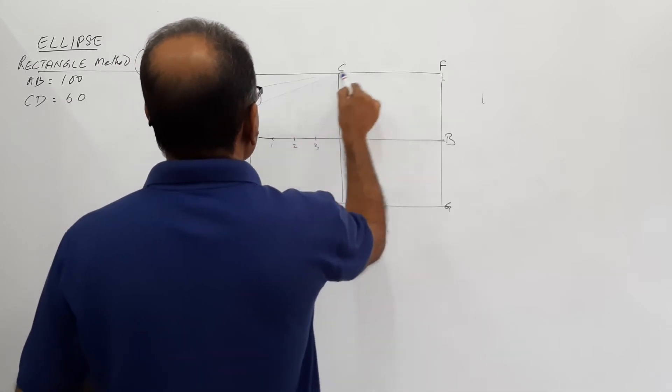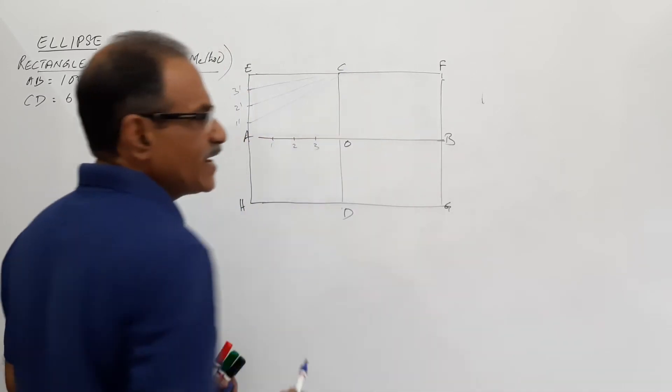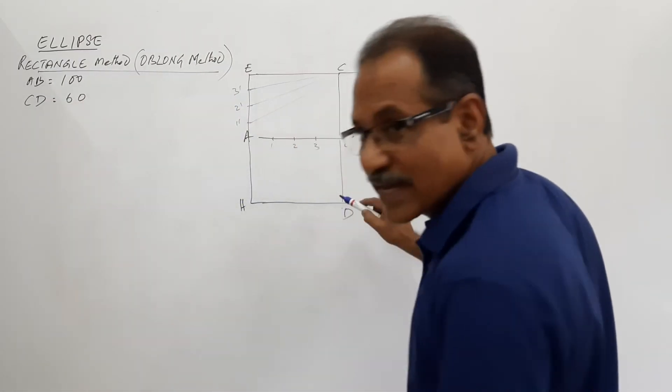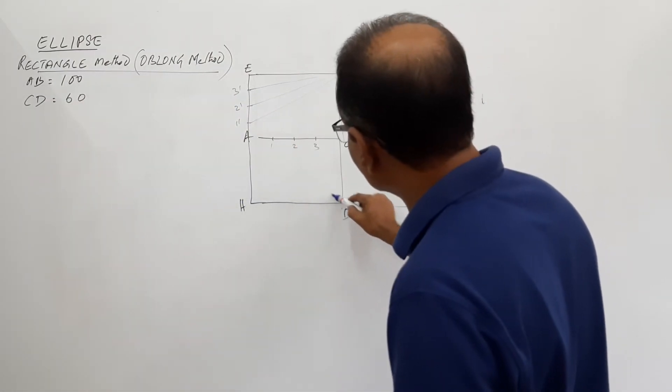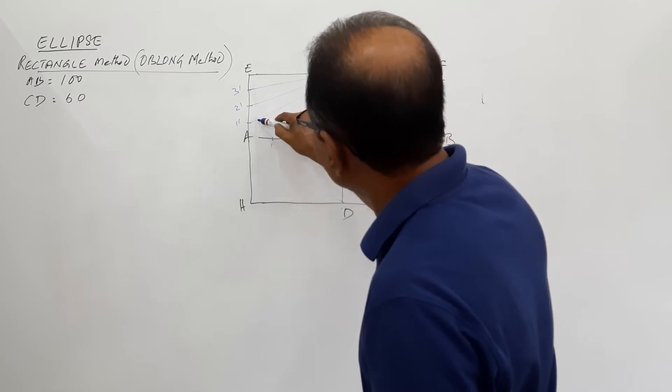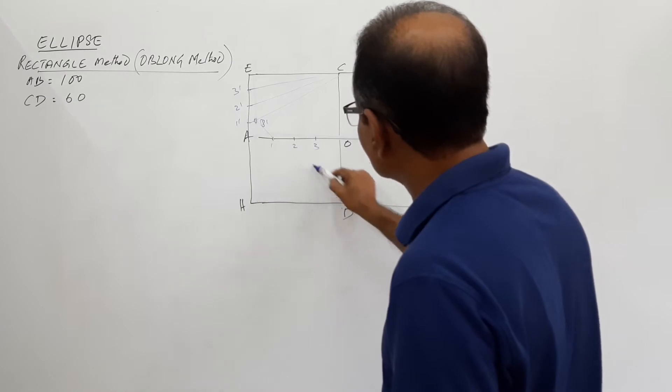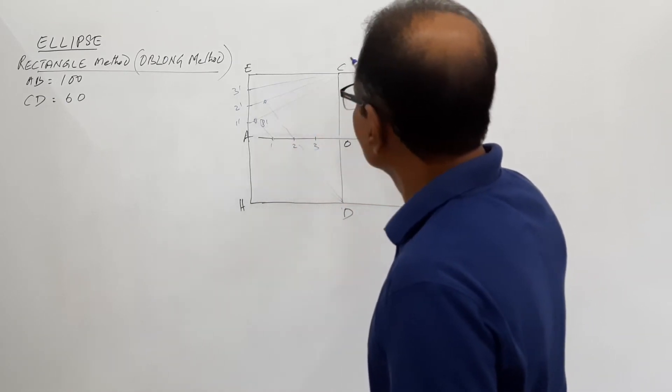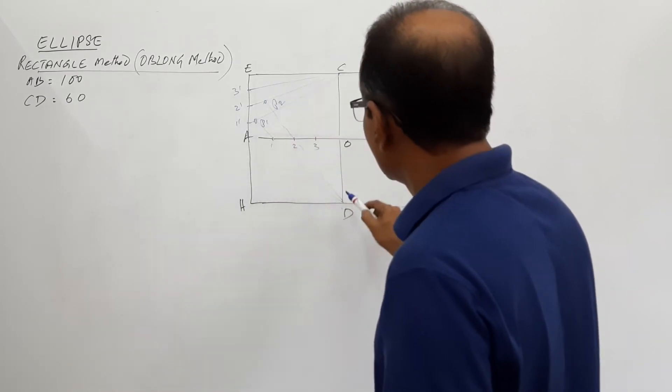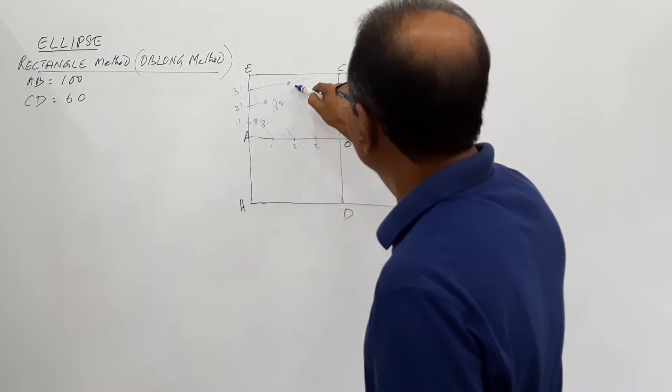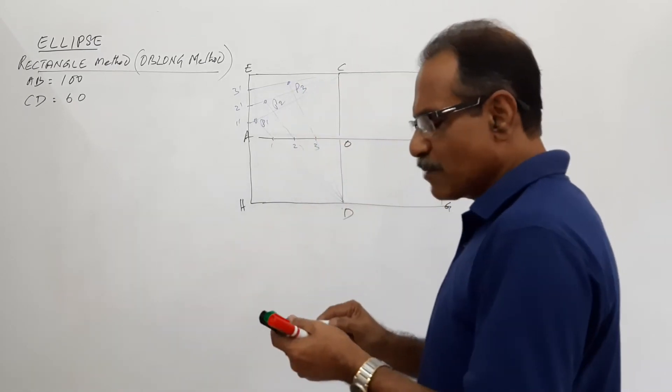Very light construction lines. Join D1 and extend by a straight line. It cuts C1 dash at P1. Join D2 and extend. It cuts C2 dash at P2. Join D3 and extend. It cuts C3 dash at P3. You have got 3 points.